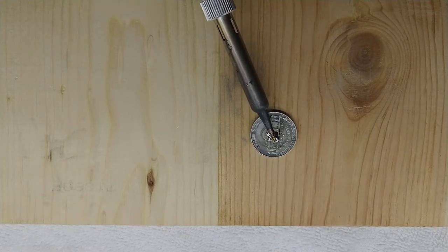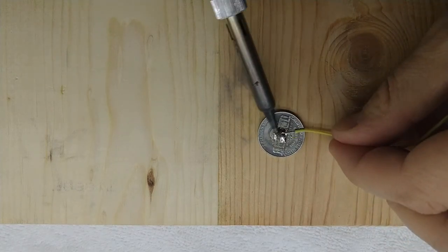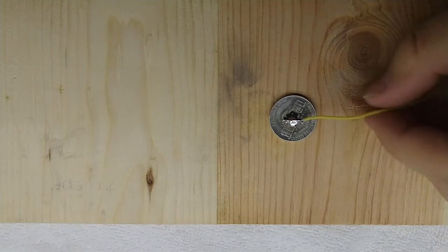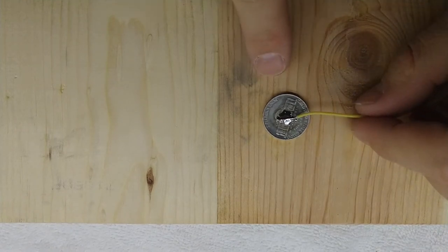Once you've got a nice pool of solder on there, go ahead and slip a lead right into the pool of solder and make sure it's covered really well. Warning, touching the coin right now will definitely leave a mark.